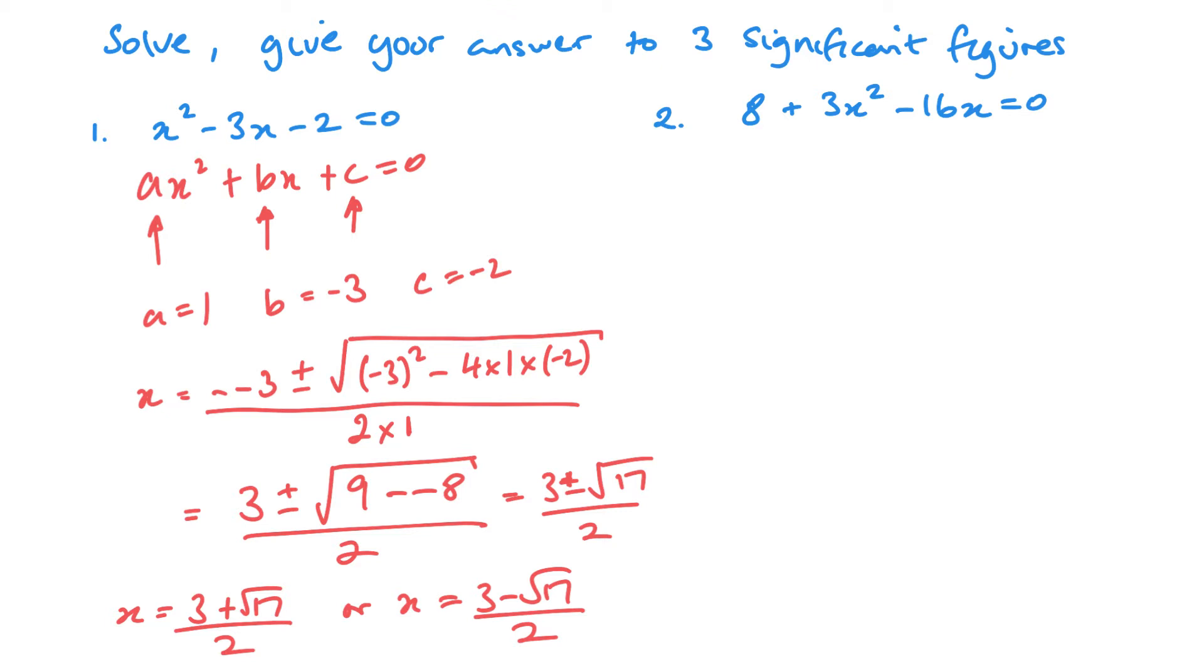Now the second question, I've set it up like a common mistake. So quite often people will approach this and think, right, A is 8, B is 3, and C is negative 16. Because they've just done it in order of the first number, the second number, and the third number. But unfortunately, that would be wrong.